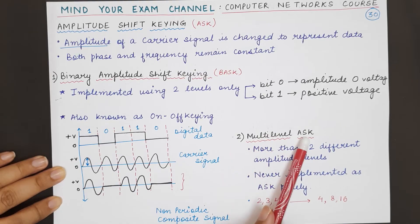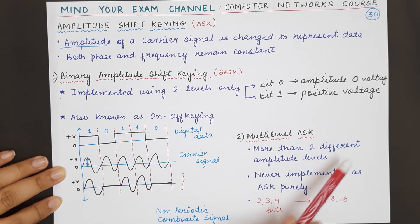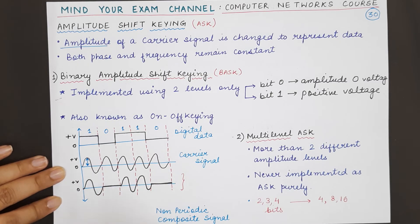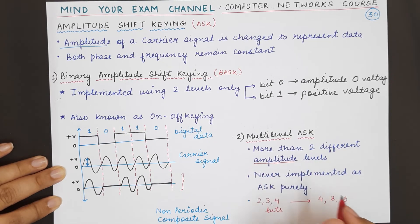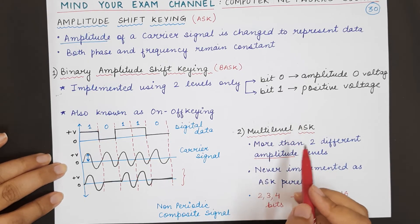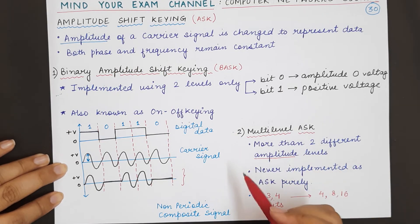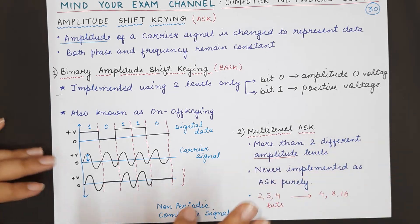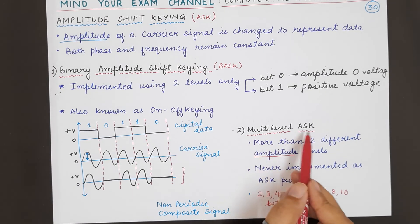Now coming to multi-level amplitude shift keying. Multi-level means there will be more than two levels of amplitude in the final modulated wave. More than two different amplitude values will be used. However, multi-level ASK is never actually used in real life purely — if it is used, it will be in combination with some other technique, which we will see in a future lecture. For now, remember that pure multi-level ASK is more of a theoretical concept.